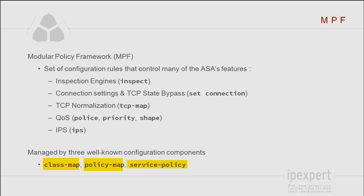A class map is where we will specify and identify the traffic — define what packets we want to take an action for. We can match packets using access lists, the ACL, IP precedence values, tunnel groups, and also the match port command, which is unique to the ASA.